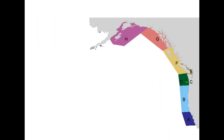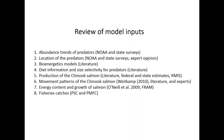This study looked at the spatial distribution of overlap of predator and prey from central California up to the Gulf of Alaska. The key model inputs included abundance trends and locations of predators, the bioenergetics models, diet information, information about production of Chinook salmon — both wild and hatchery fish — movement patterns estimating the overlap of predator and prey, energy content and growth of salmon, and fisheries catches. This sort of detailed accounting of sources of mortality and pressures on the system is quite typical as we take on ecosystem-based management questions.